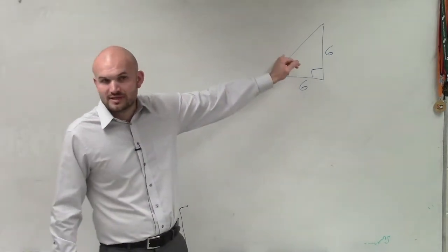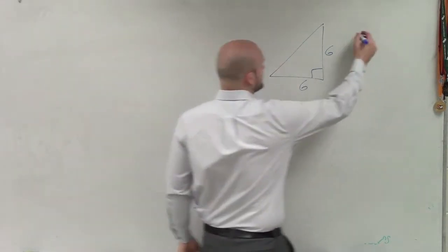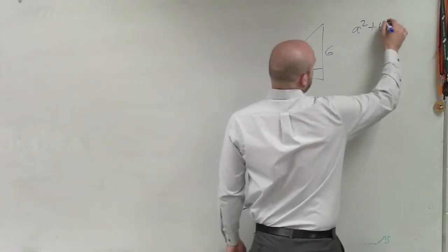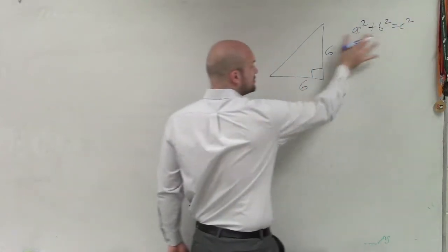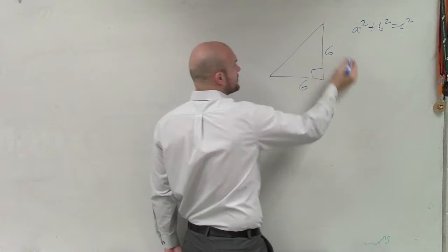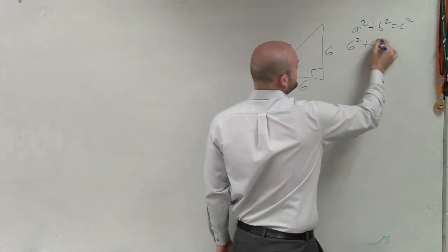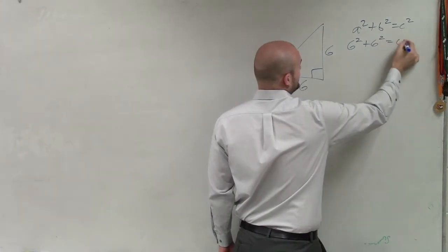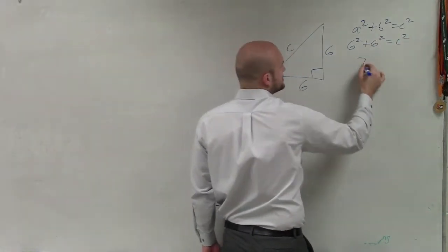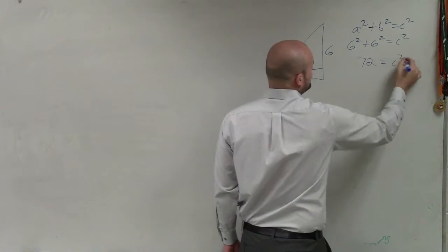So what we first need to do is determine what the hypotenuse is. I'll use Pythagorean theorem. a squared plus b squared equals c squared, where your two legs squared equals your hypotenuse squared. So we don't know what our hypotenuse is here. Do 6 squared plus 6 squared equals c squared. That's 36 plus 36, which is 72, equals c squared.